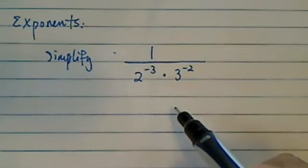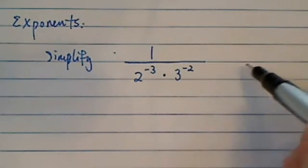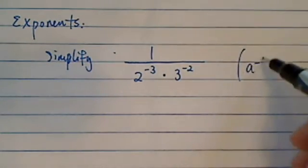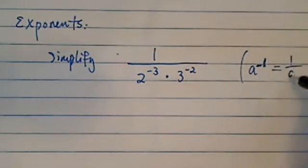To simplify this exponents, there are a couple ways you can do it. The easiest, of course, is through recognizing that if I have a to the minus 1, that's really 1 over a.